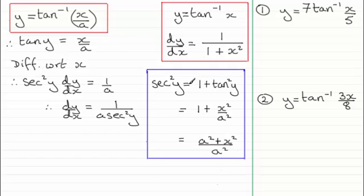So if sec squared y equals 1 plus tan squared y we can substitute the fact that tan y equals x over a into here and get 1 plus x squared over a squared. And then putting this over the lowest common multiple a squared then we end up with a squared plus x squared over a squared.